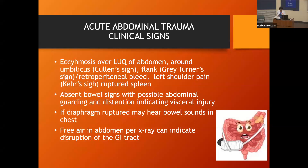Spleen ruptures come in grades — grades one, two, three, and four. Four would be the most serious. When you check your bowel sounds, listen and check all four quads, because absent bowel sounds can mean possibly there's some injury or some bleeding in the abdomen.